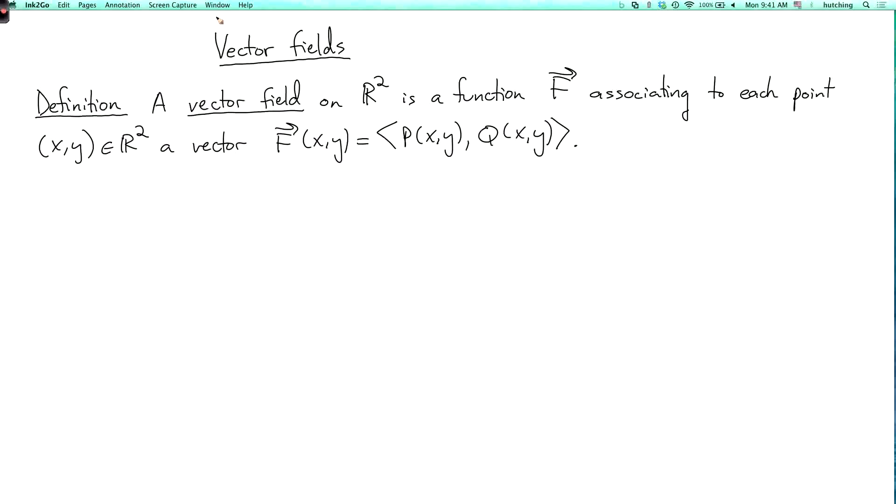We're now going to talk about vector fields. So a vector field on R2, on the plane, is a function which associates to each point instead of a number, now it's a vector, a two-component vector. So for each point xy, there's a vector f of xy, and we could call its components p of xy and q of xy.